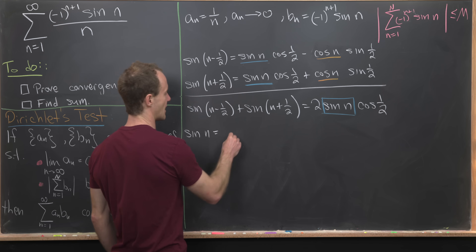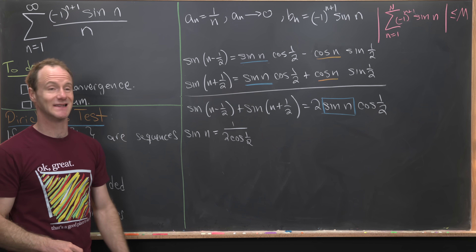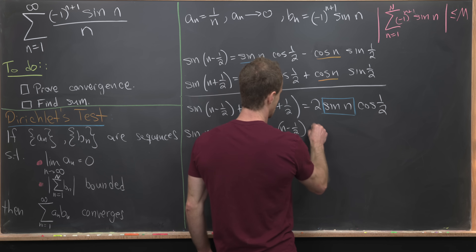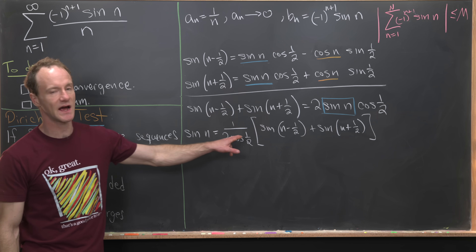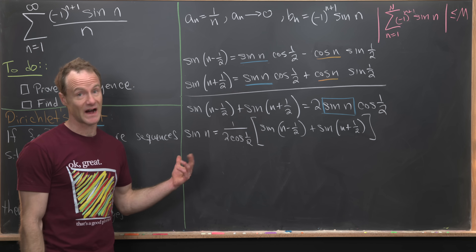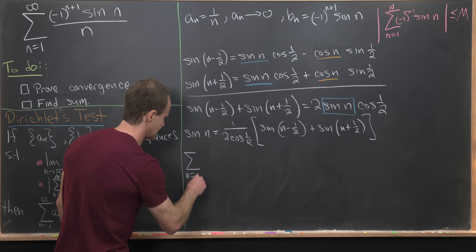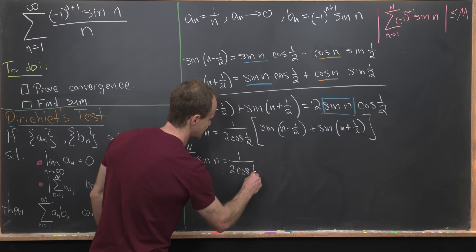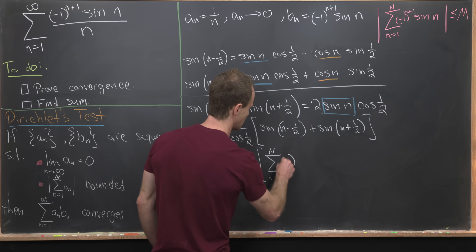Note that cosine of 1/2 is not zero, so dividing by it is fine. Now we'll take the partial sum of both sides. Since it's a finite sum we can split it into two pieces: the sum as n goes from 1 to capital N of sine n equals 1 over 2 cosine 1/2 times the sum from 1 to N of minus 1 to the n plus 1 times sine of n minus 1/2, plus the sum from 1 to N of minus 1 to the n plus 1 times sine of n plus 1/2.